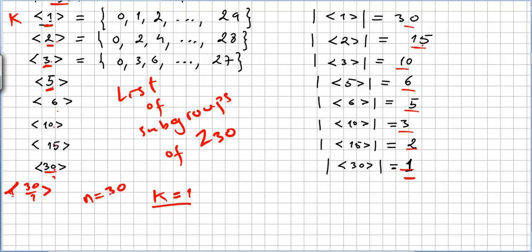So this is the group generated by 15, that is N divided by K with K equal to 2. And this will be the only subgroup of order K equals 2, that is, a subgroup of order 2.